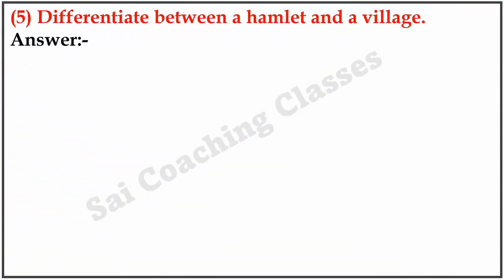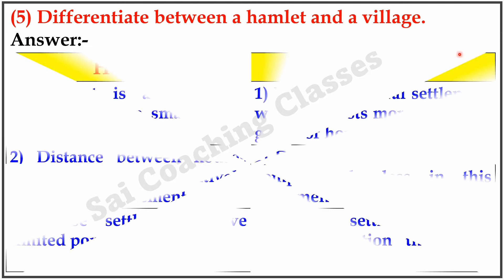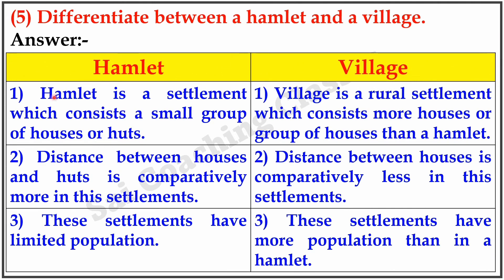Question 5. Differentiate between a hamlet and a village. A hamlet is a settlement which consists of a small group of houses. The distance between houses is comparatively more. These settlements have limited population. A village is a rural settlement which consists of more houses than a hamlet. The distance between houses is comparatively less, and these settlements have more population than a hamlet.